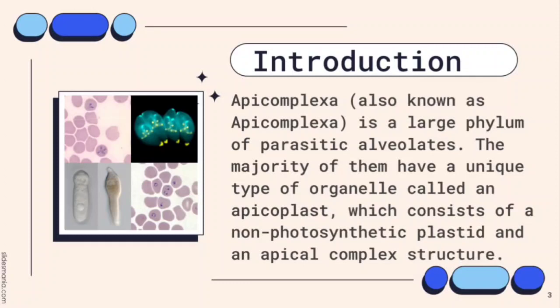A major defining characteristic of this group are flattened vesicle-like structures called cortical alveolae, which are found just underneath the plasma membrane. Formerly, the Apicomplexa were part of a group called Sporozoa, and this name is still sometimes used.